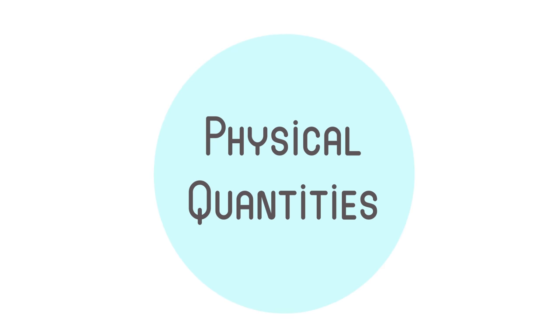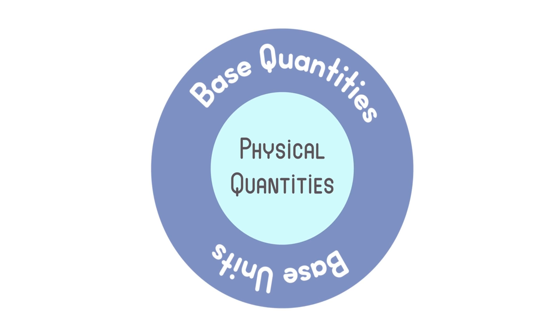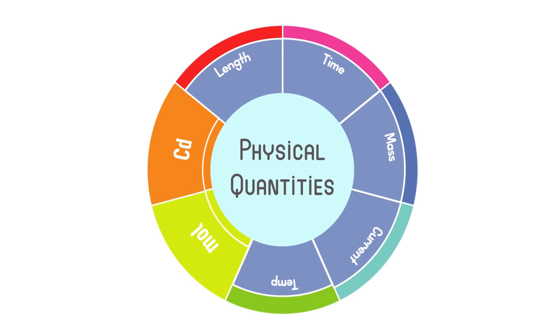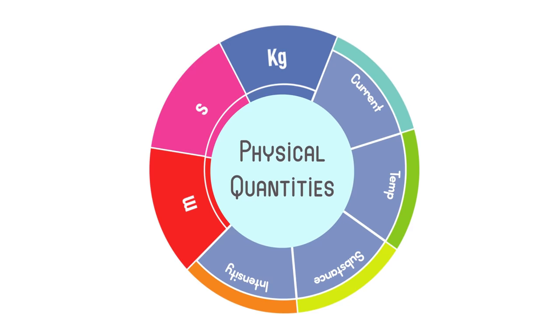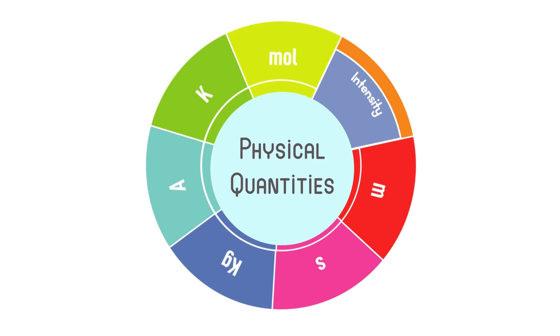Now, coming back to the base and derived quantities, we have understood about these quantities. Now, we will have a look at the units in which these are measured. Base units: The units used to measure base quantities are called base units. We now know that base quantities are seven in number. But in what units are these quantities measured? Well, length quantity is measured in metre, time is measured in second, mass in kilogram, electric current in ampere, temperature in Kelvin, amount of substance in mole, and intensity of light in candela.